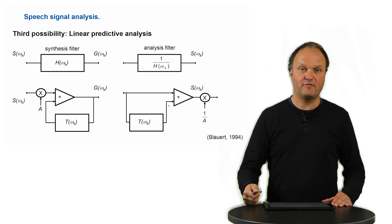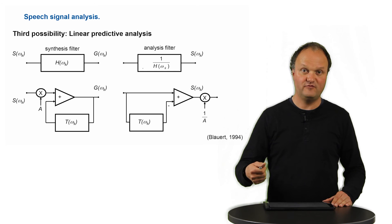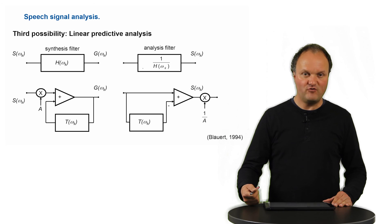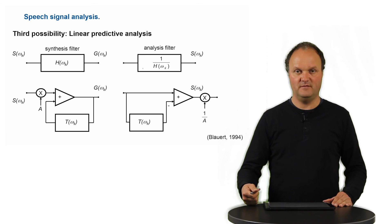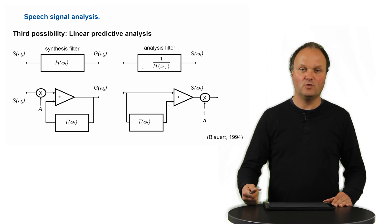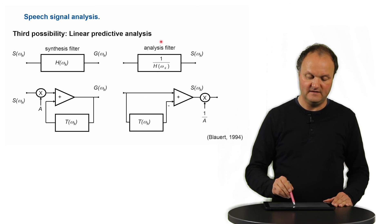So we have three ways of analyzing speech signals: spectral analysis, doing a frequency analysis of the speech spectrum; cepstral analysis, separating the excitation from the vocal tract shape; and linear predictive analysis, which also does a separation by calculating the inverse of the vocal tract filter.